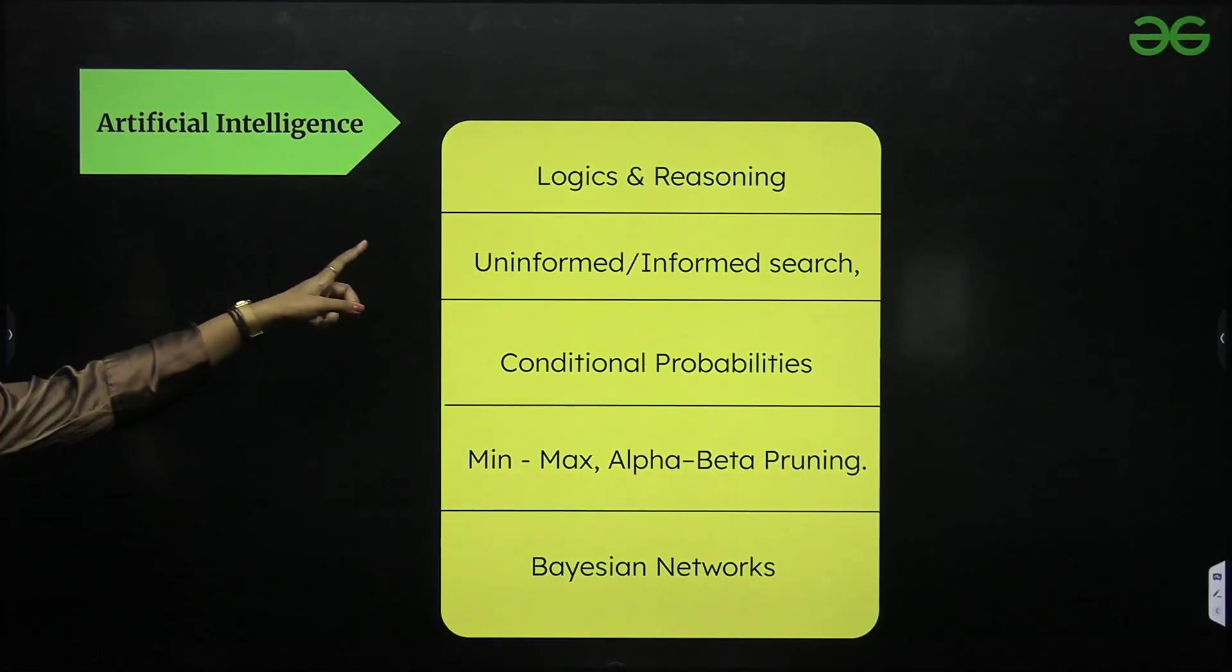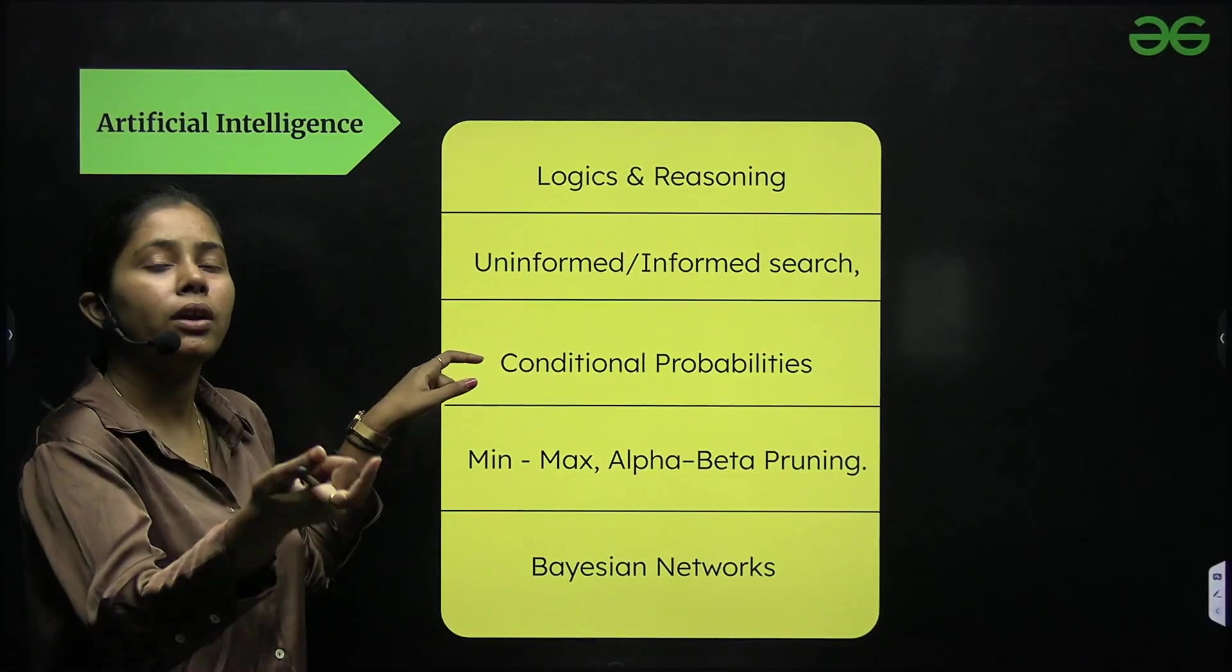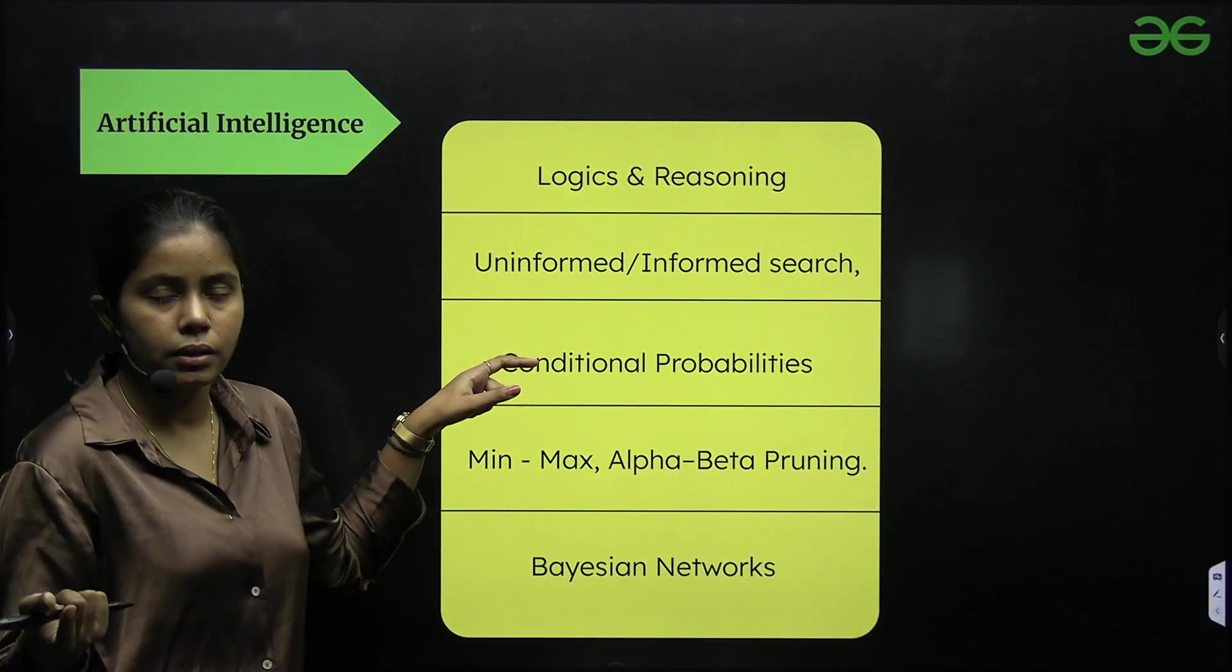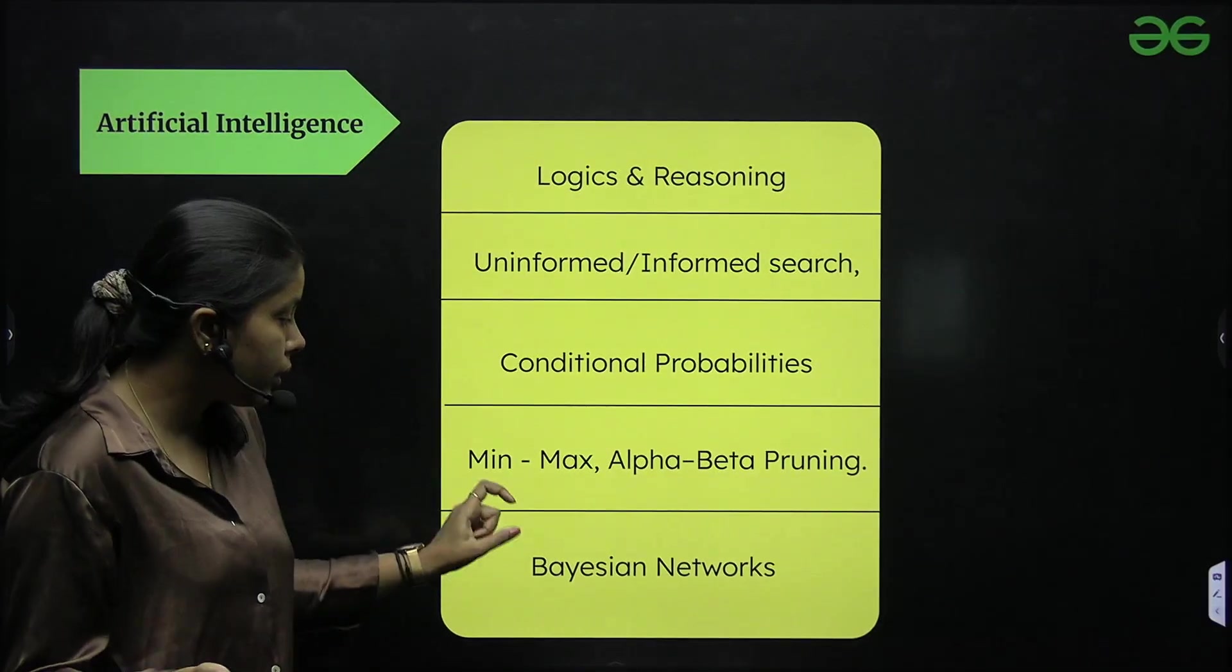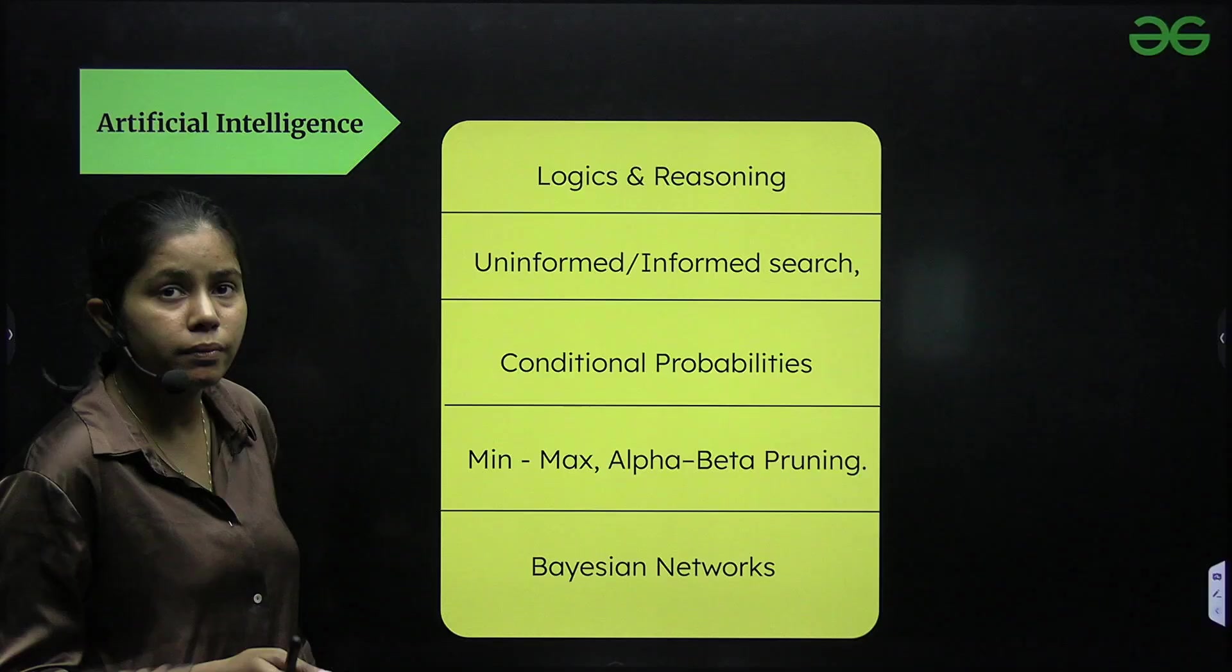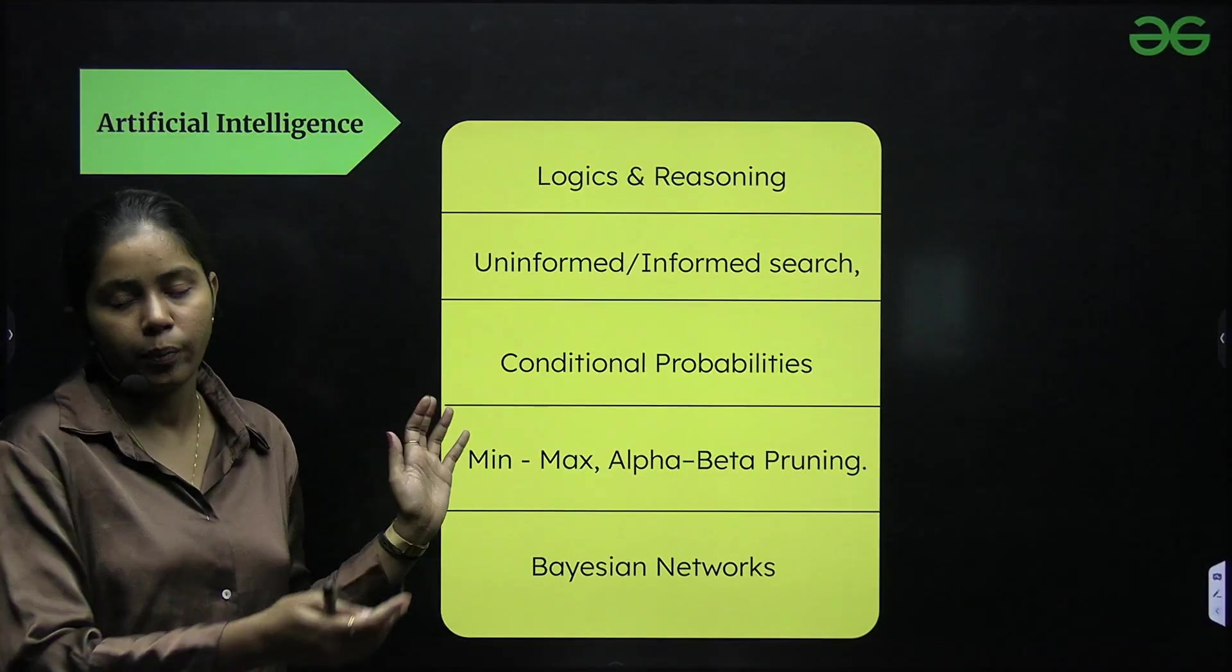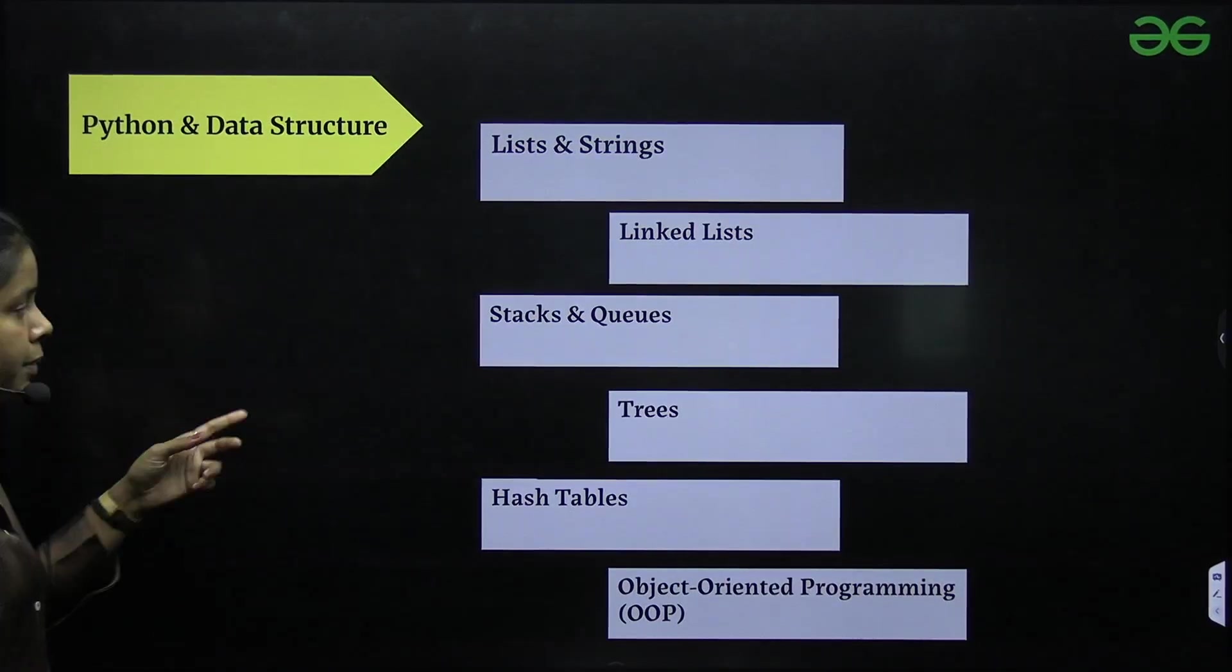And also we have artificial intelligence: logic, certain reasoning, uninformed and informed search, conditional probabilities. Conditional probabilities you already study in probability and statistics, but this conditional probability you're going to use to work on Bayesian networks. So just make sure that you guys revise these topics again and again.